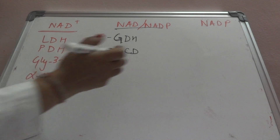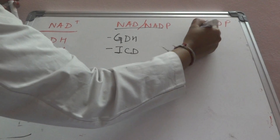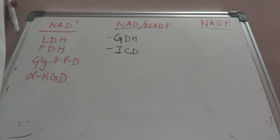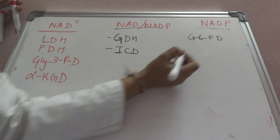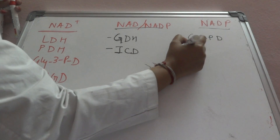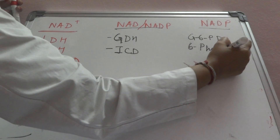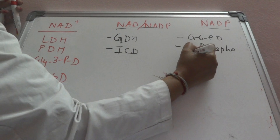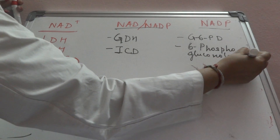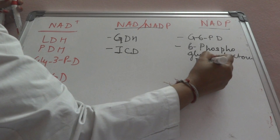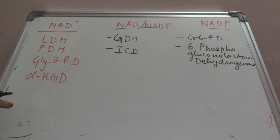NADP+ is used in the hexose monophosphate shunt — that is glucose-6-phosphate dehydrogenase and 6-phosphogluconate dehydrogenase. Both of these enzymes are in the hexose monophosphate shunt, because that pathway only provides us with NADPH.